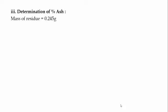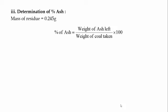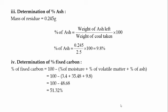For the determination of ash content, the same crucible was used again. The mass of residue was 0.245 grams. Here we focus only on the mass of residue — as stated in the problem, the mass of residue left is 0.245 grams, so we do not subtract from earlier weights. Percentage of ash = (weight of ash left / weight of coal taken) × 100, calculated as 9.8%. The percentage of fixed carbon is 100 minus the other three contents, calculated as 51.32%. And we are done with the proximate analysis.